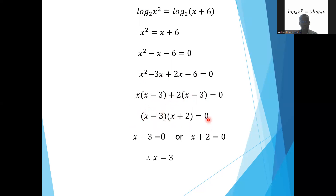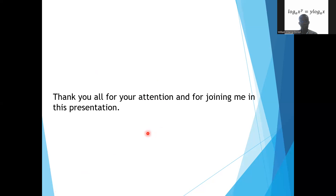Either factor equals zero: x minus 3 equals 0 gives x equals 3, or x plus 2 equals 0 gives x equals negative 2. But the question wanted the positive value. Therefore x equals 3. That's how we apply the laws of logarithms — the laws we have treated can be used to solve these questions. Thank you for your attention and for joining me in this presentation. Bye.